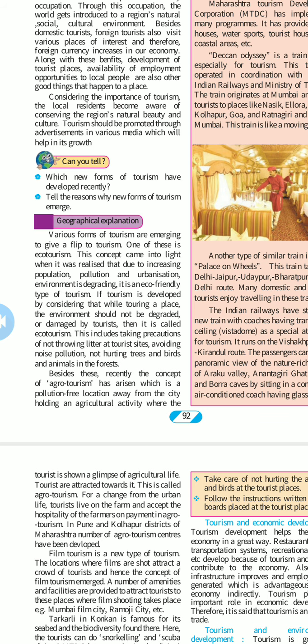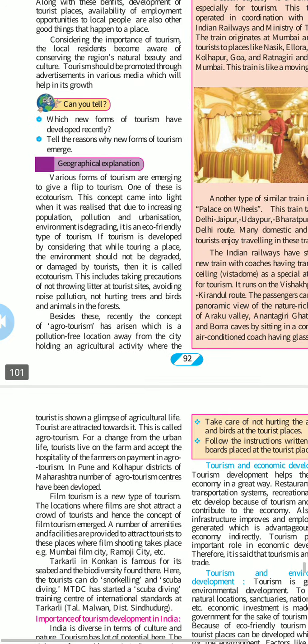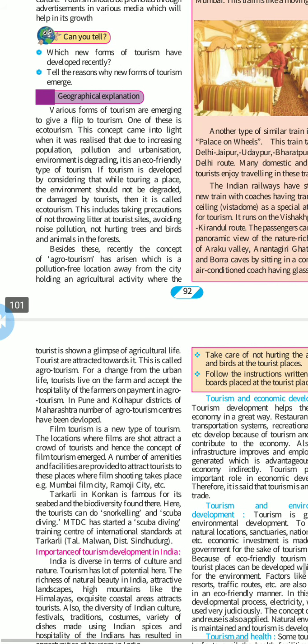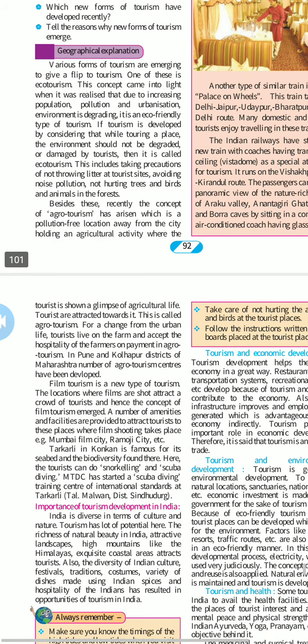Recently, a concept of agro tourism has arisen, which is a pollution-free location away from the city involving agricultural activity, where tourists are shown a glimpse of agricultural life. Tourists are attracted towards it. For a change from urban life, tourists live on the farm and accept the hospitality of the farmers on payment. In Pune and Kolhapur districts of Maharashtra, a number of agro tourism centers have been developed.